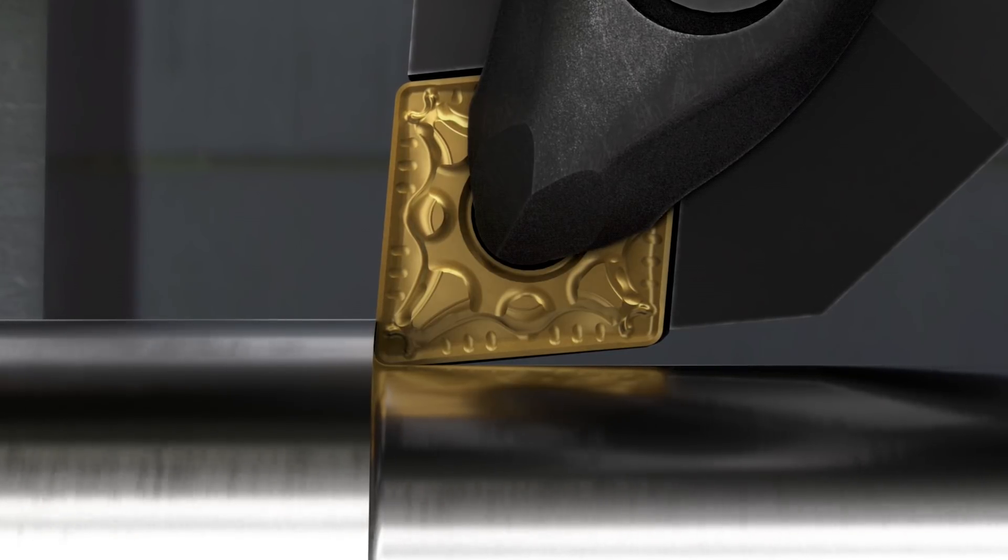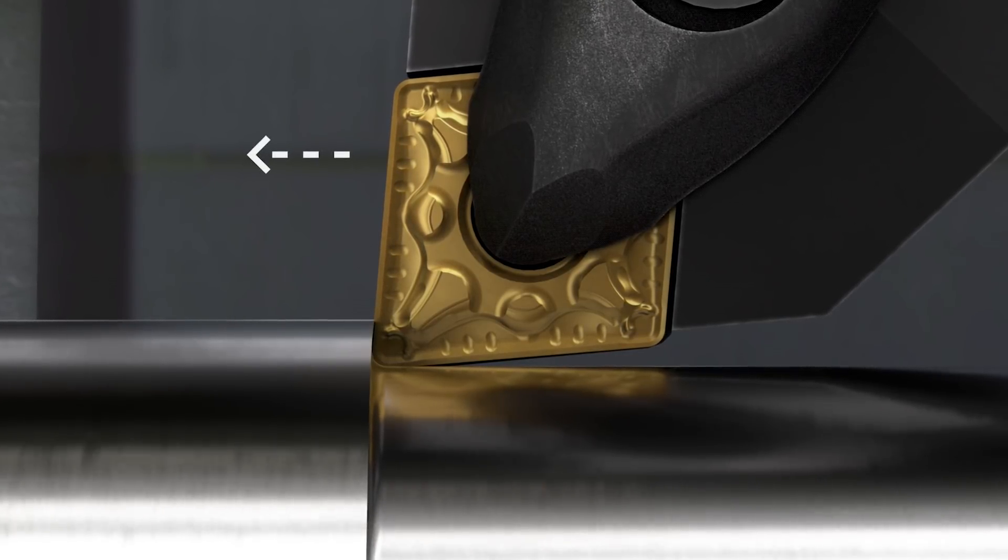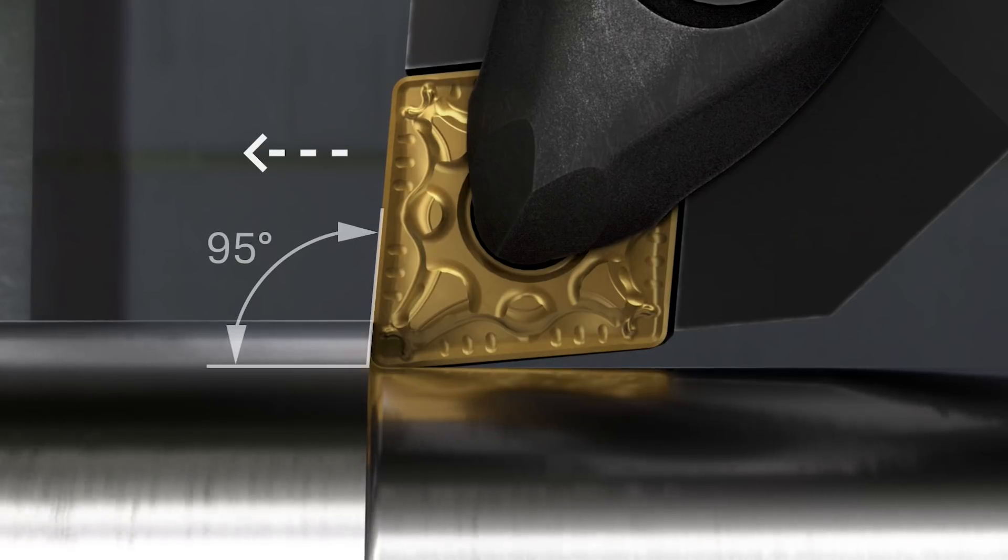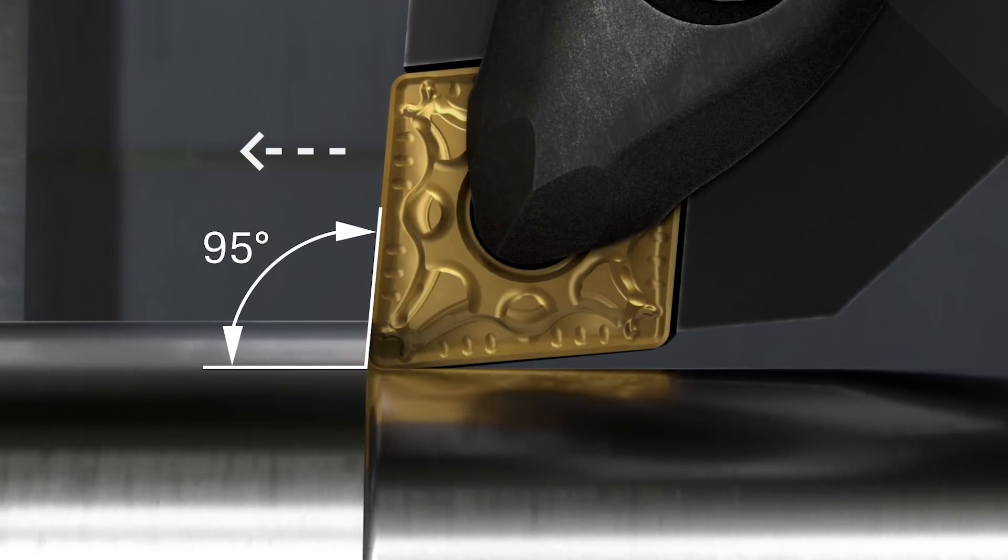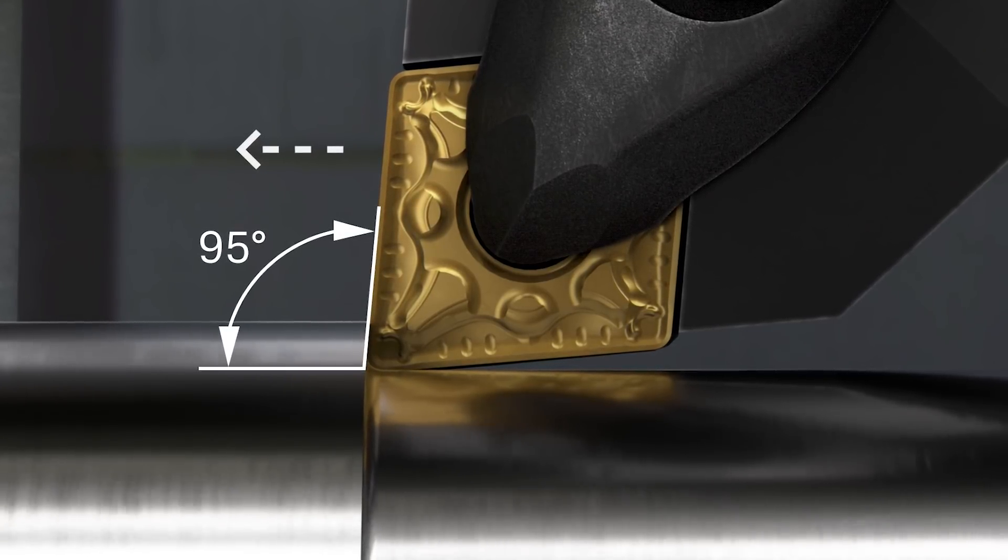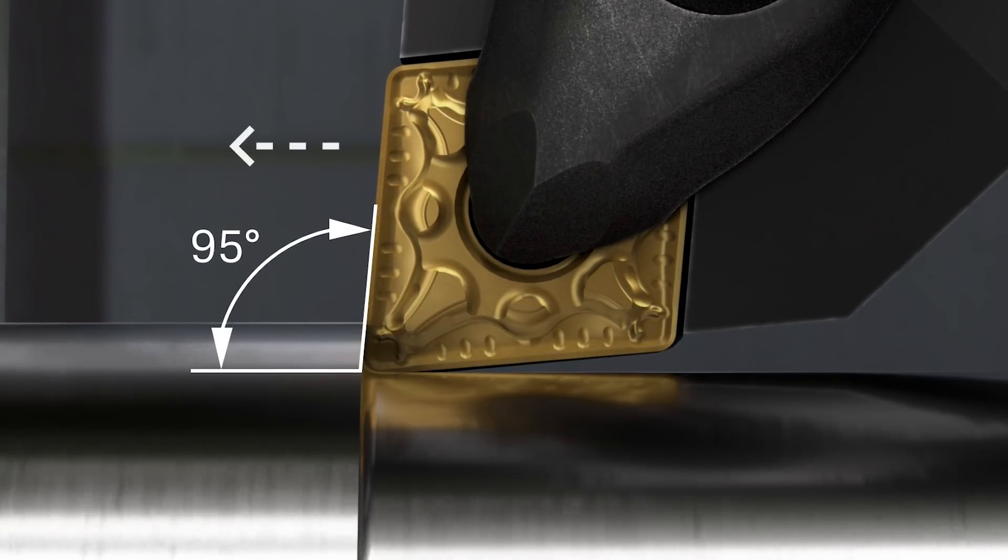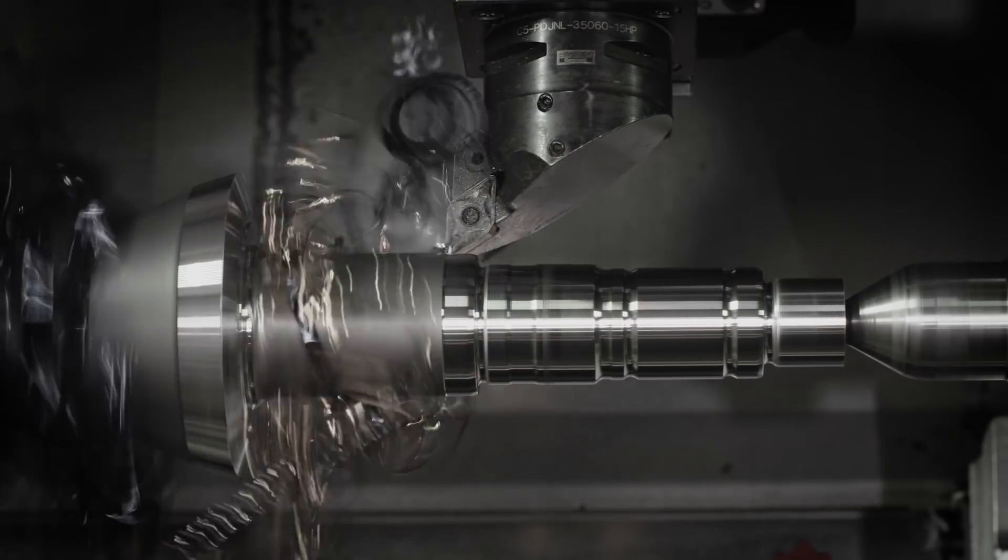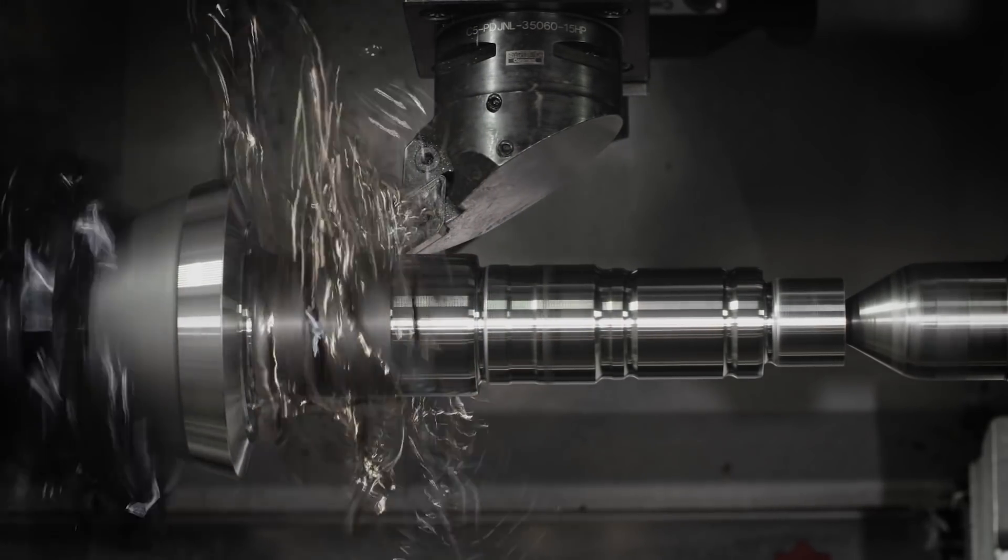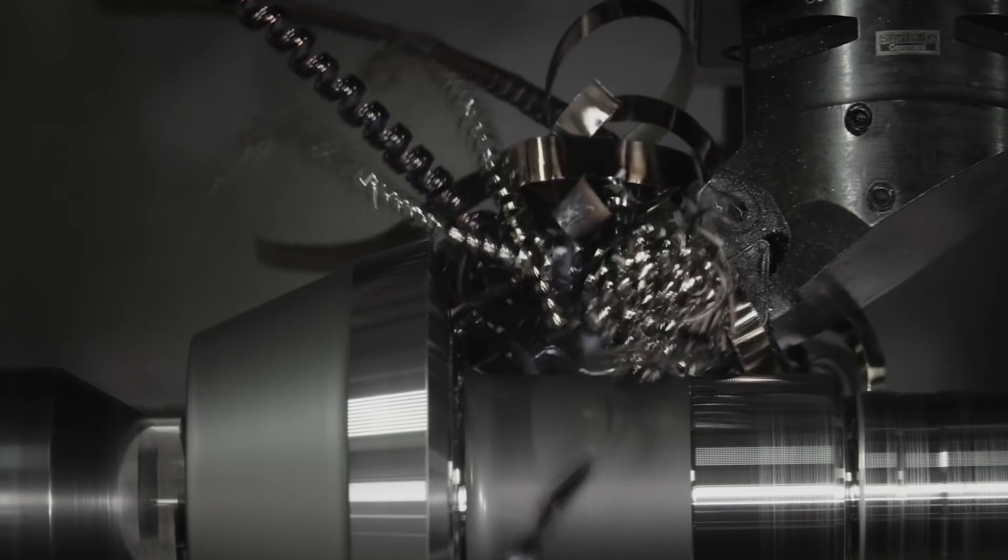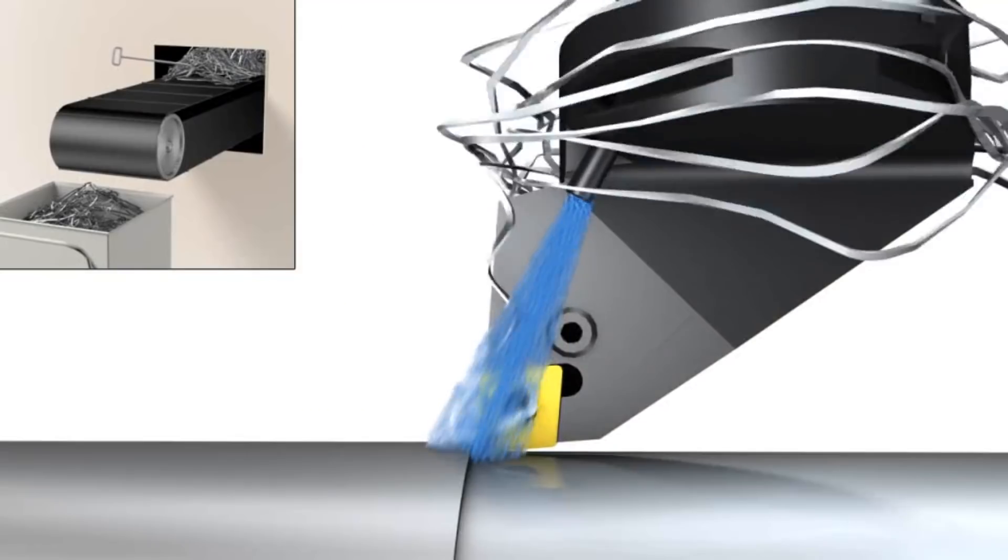Many shops try to be as efficient as possible with conventional turning, using tools with large entering angles and the largest nose radius possible. This helps thin the chips, resulting in increased tool life and productivity. However, this method makes chip breaking more difficult, leading to long, stringy chips that can wind around tools or the workpiece.